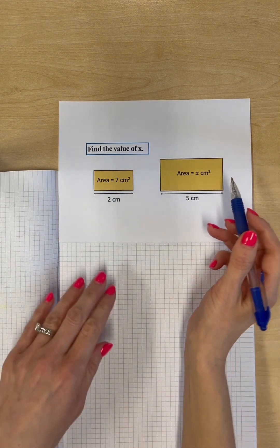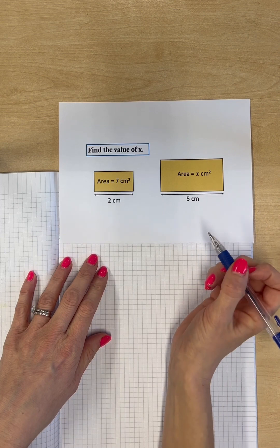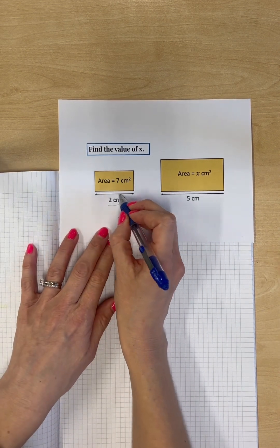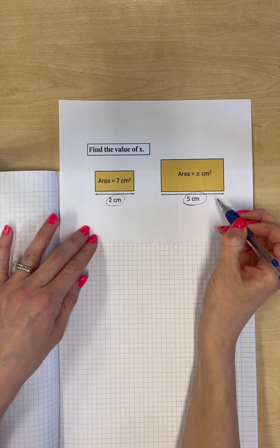So, we need to work on our scale factors. The only information that we're given is a 2 and a 5, and those are lengths.